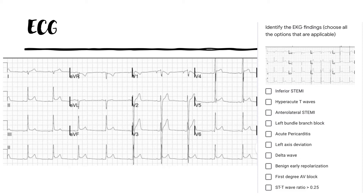This particular EKG is a normal sinus rhythm. You can see P waves before every QRS complex and there is no PR prolongation or QRS prolongation. The material we are testing today is whether you can recognize ST segment elevations in multiple leads — in fact, in almost all the precordial leads — with no reciprocal ST depressions.